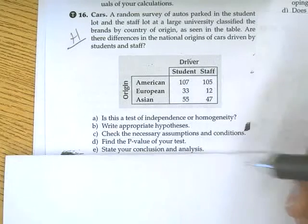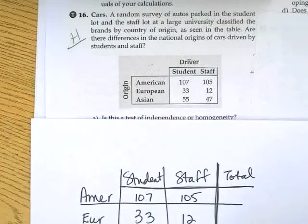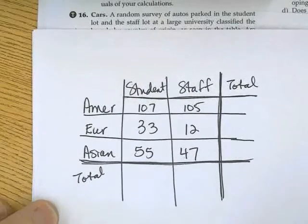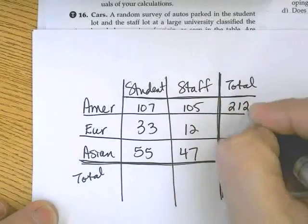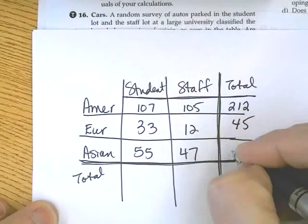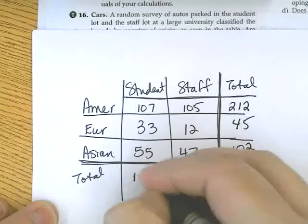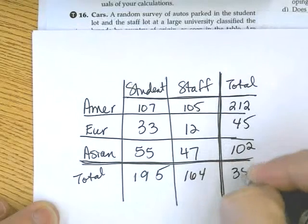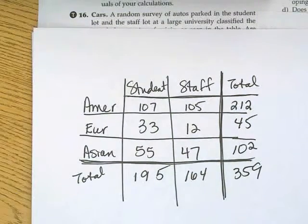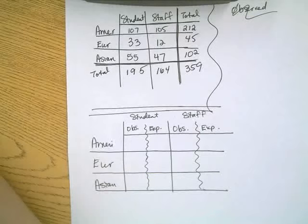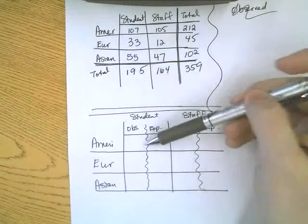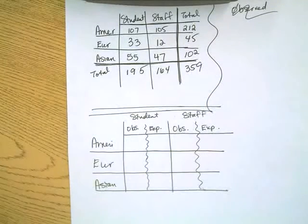I've made a table with these numbers. We need to find the totals. If you haven't written this down, go ahead and pause the video. I've created another table split in half so I can see the observed and expected values for students and staff side by side.